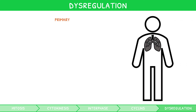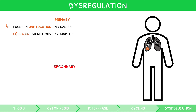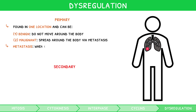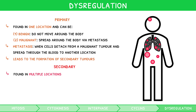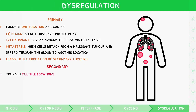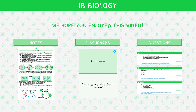When describing tumours, there are two distinct categories: primary and secondary. Primary tumours are generally found in one location and can be benign, which do not move around the body, or malignant, which spread around the body via metastasis. Metastasis is when cells detach from a malignant tumour and spread through the blood to another location, leading to the formation of secondary tumours, which are found in multiple locations. We hope you enjoyed the fifth and final video in our IB Biology Topic 1 video series. Check out our notes, flashcards, and questions on our website to reinforce your understanding.